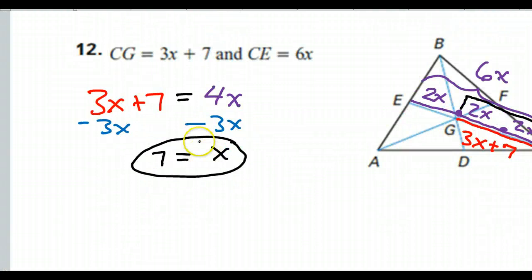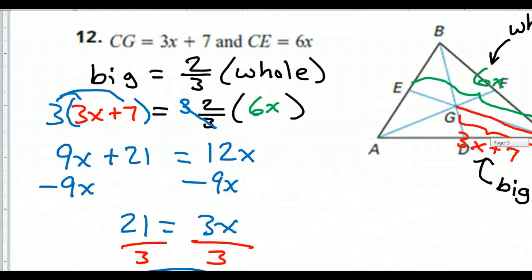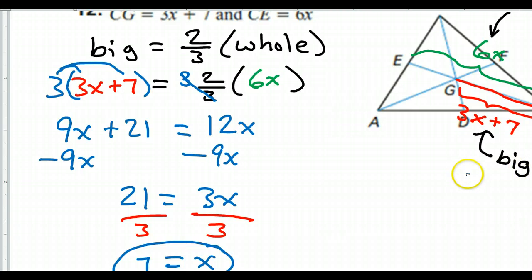That's the same answer we got with the first method. Clearly method one is much easier, so splitting into three equal parts is the way to go when it works. In other videos there are certain problems where you have no choice but to use the two-thirds formula — like problem number 20. It's good to know both, but hopefully you can avoid the longer method most of the time. That's how you do number 12.